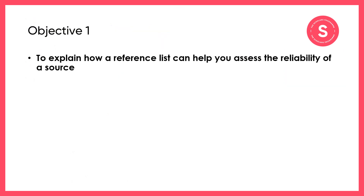Let's go back to the first objective: to explain how a reference list can help you assess the reliability of a source. Take a few minutes to write down in your own words how a reference list can help you assess the reliability of a source. You may want to pause the video to do this.